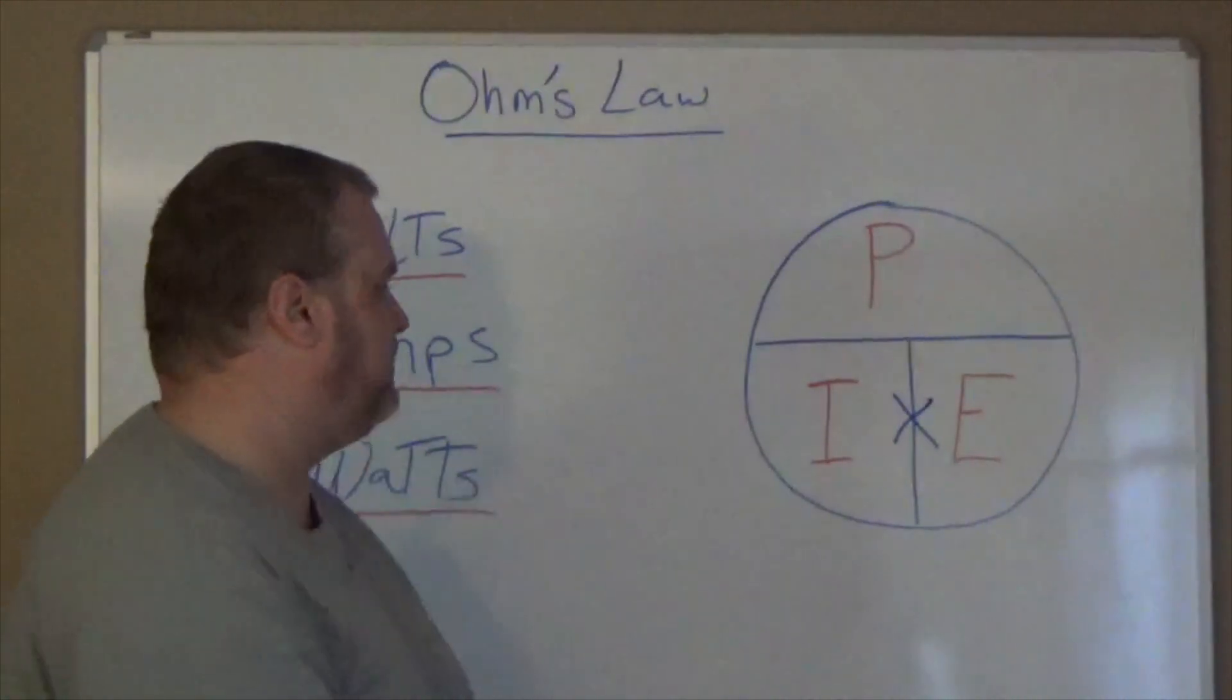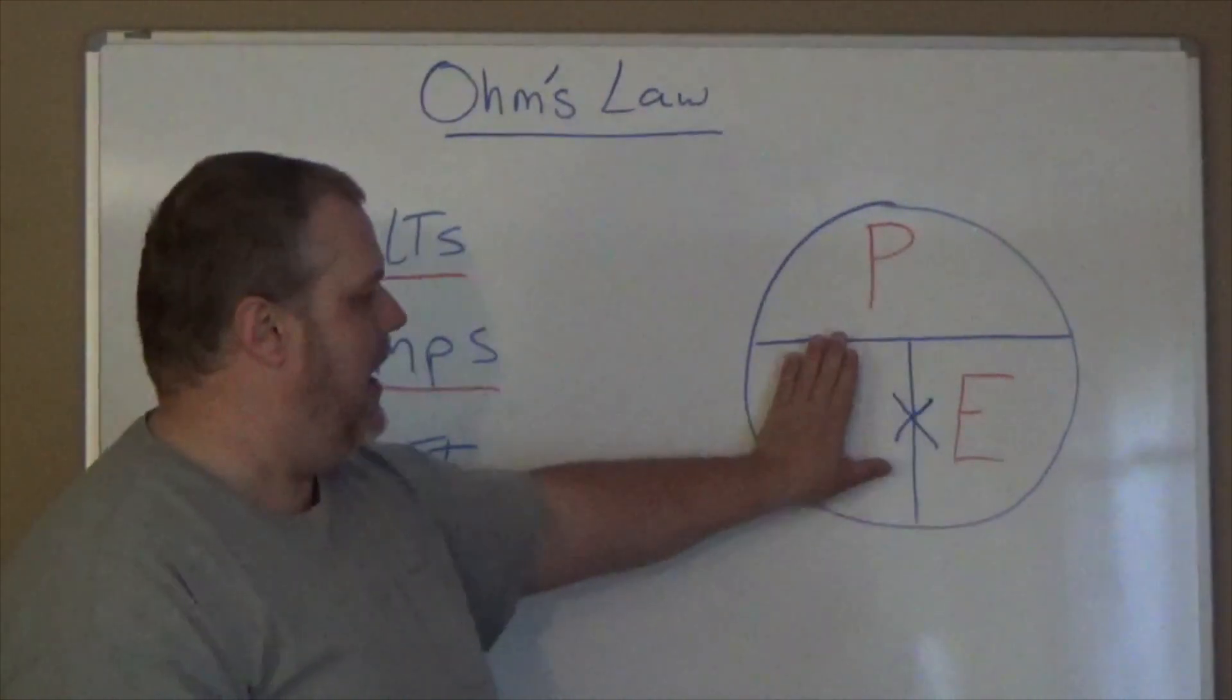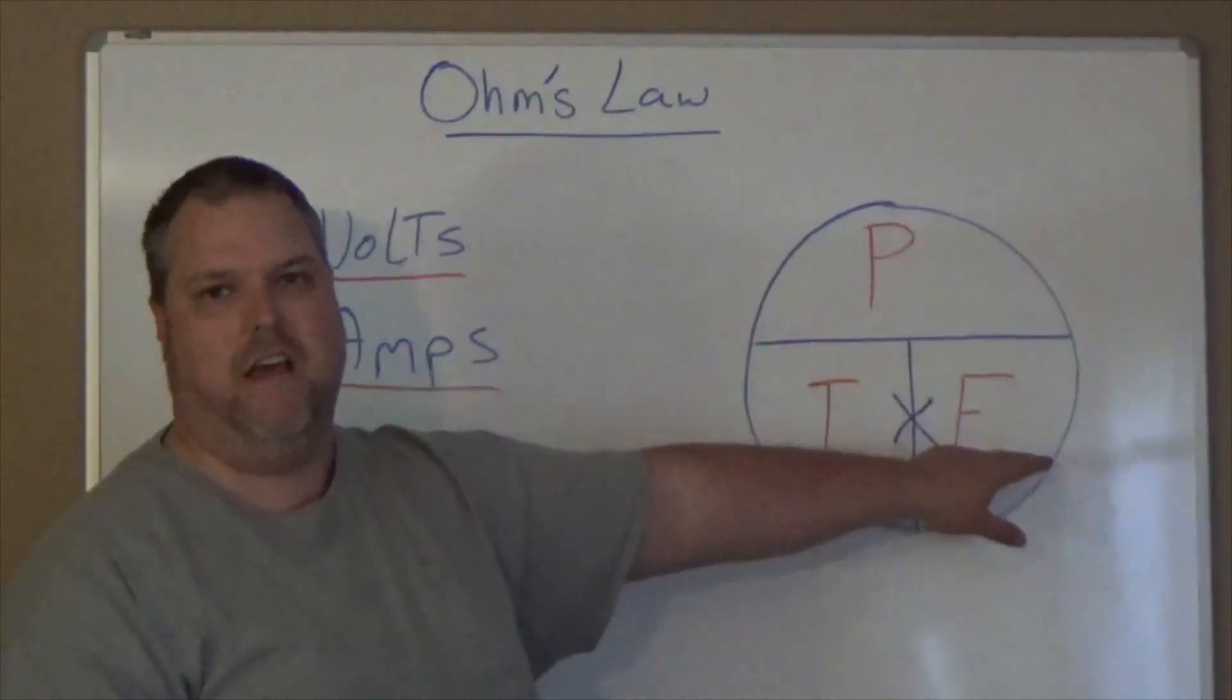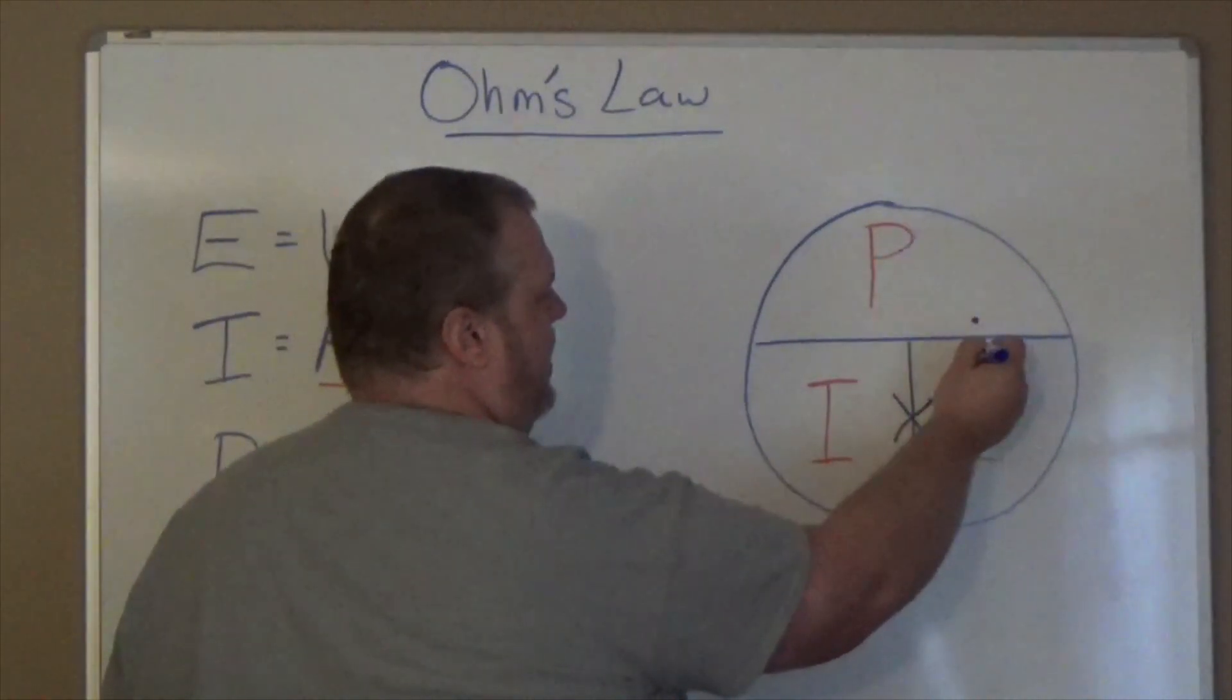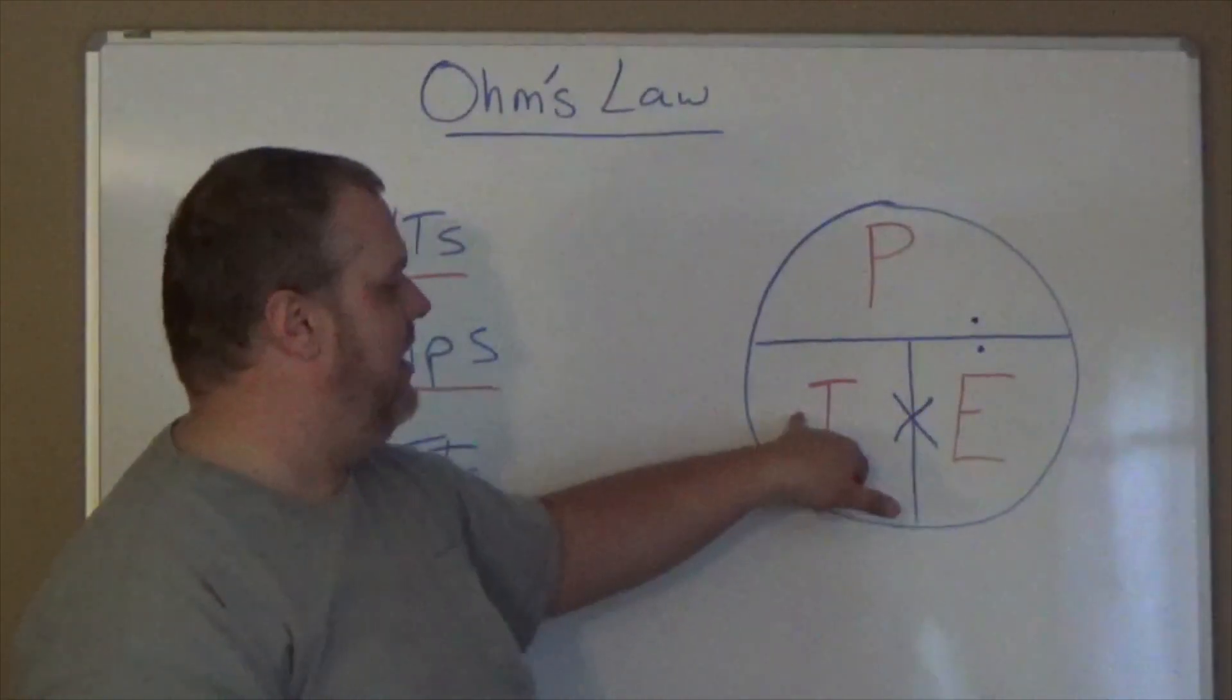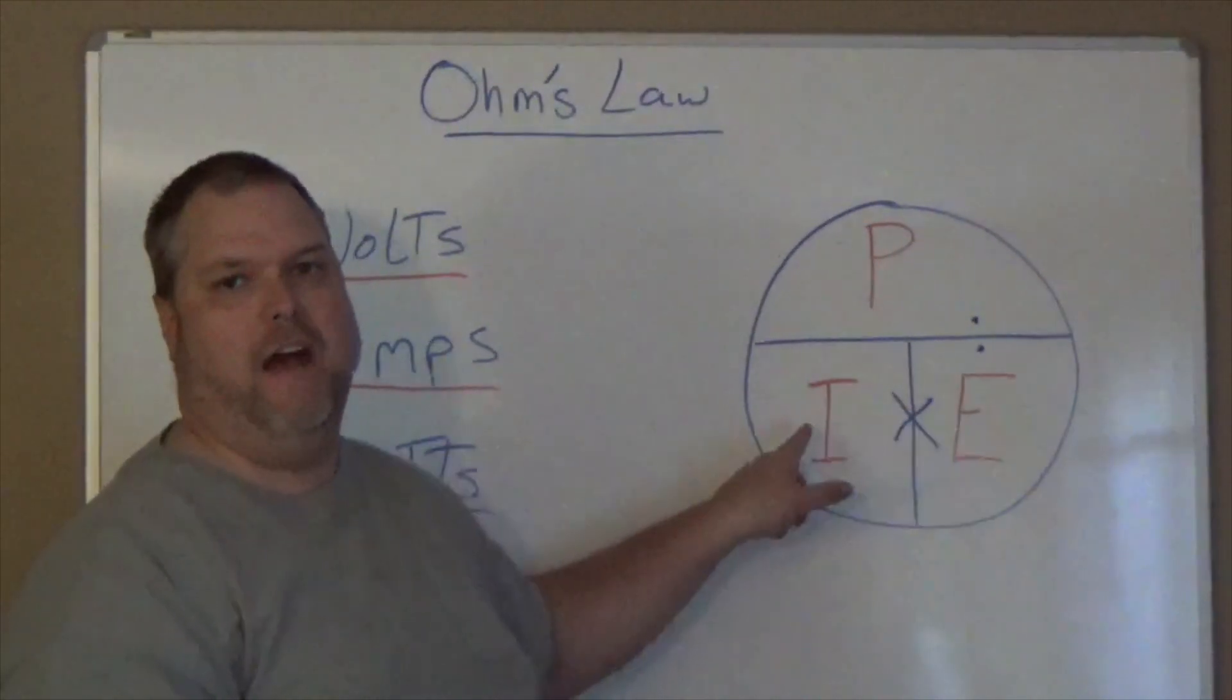If I wanted to find I, I could cover up I, and I would need watts and volts. We cover up the I, we take P, and we use this little line as the divide symbol. So to find I, we're going to take watts divided by volts, and that will give us our amps.